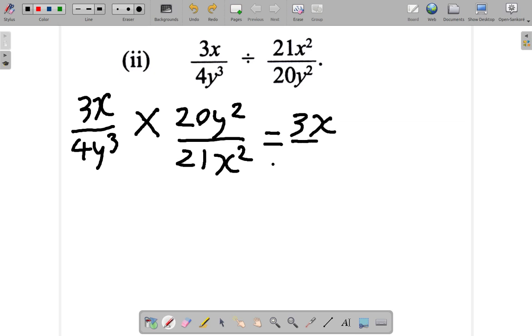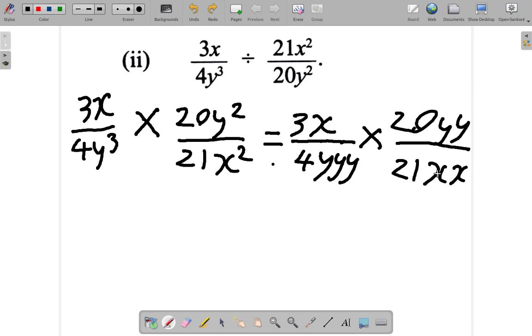At the top, you have 3x over 4y cubed. When you say y cubed, it means y by y by y. So 3 y's multiply one another, times 20y squared, meaning y by y, over 21x squared, meaning x by x. You don't necessarily have to do that, but it's just to clarify it in case you are a bit lost.